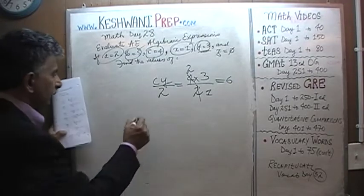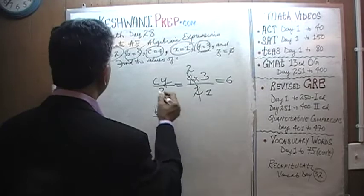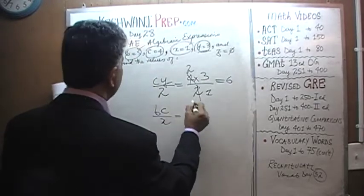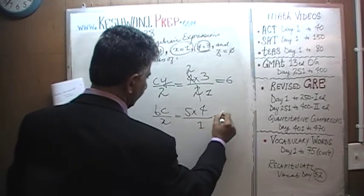How about B times C over X. B which is 5 times C which is 4 over X which is just 1. So that's just going to be 20.